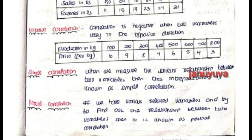Negative Correlation is when the value is decreasing. For example, Production in kg and Price per kg. Production: 100, 200, 300, 400, 500, 600, 700, 800 — the first variable is increasing. Price per kg: 10, 9, 8, 7, 6, 5, 4, 3 — this is a decreasing value. That is Negative Correlation.